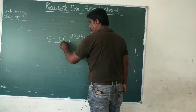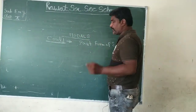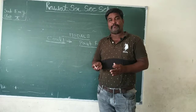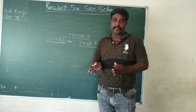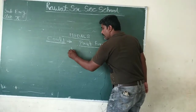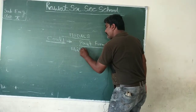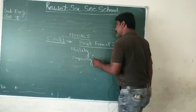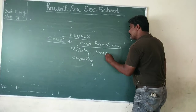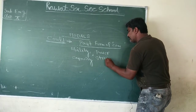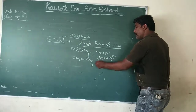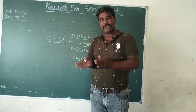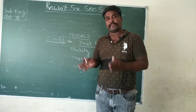Okay, let's start. Today we are going to discuss the use of 'could'. All students will make a note in the notebook. 'Could' is the past form of 'can'. 'Can' is the present form and 'could' is the past form. Both are used for ability, capacity, power, and strength.